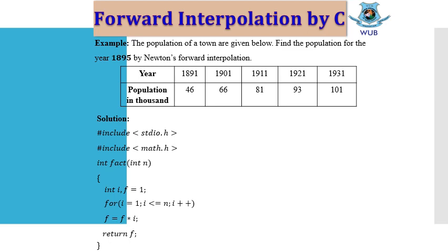This factorial counting equation is very simple: f multiplied by i, where i is the iteration value and f is the initial value. For counting the factorial value, we have to initialize f as 1. After calculating the value, you can return an integer value.